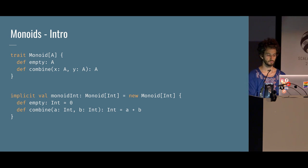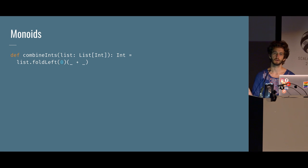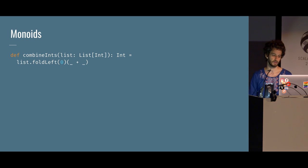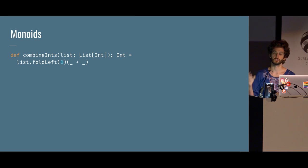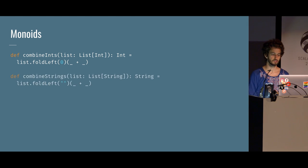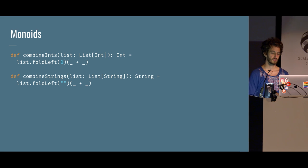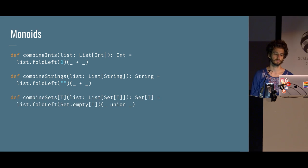A quick example would be the integer addition monoid, which has zero as its empty and uses addition to combine two things. This is one of the most basic monoids. We can use them to combine a bunch together — for example, a list of integers, and we can use fold left with zero and addition to fold that list into a single integer.